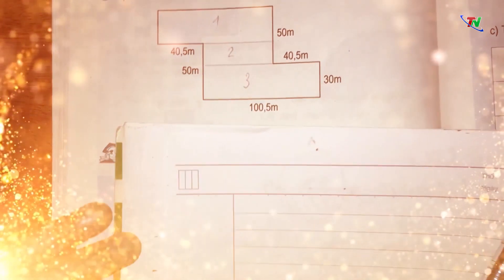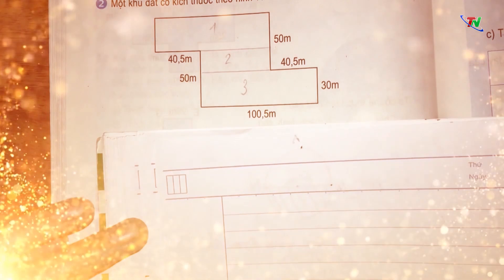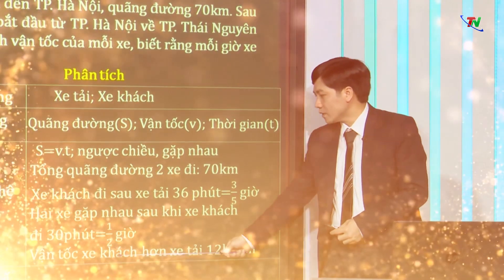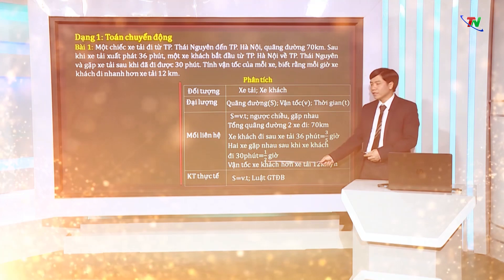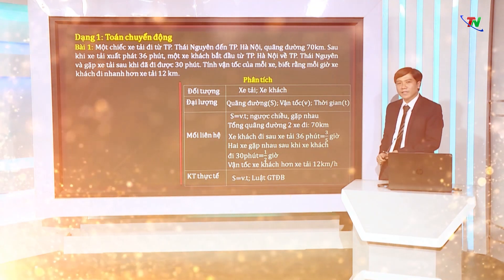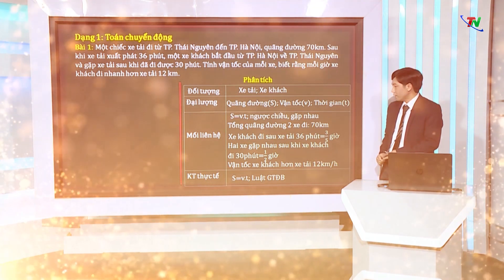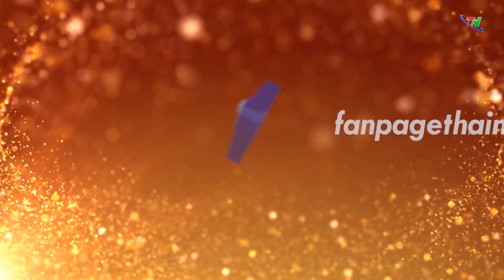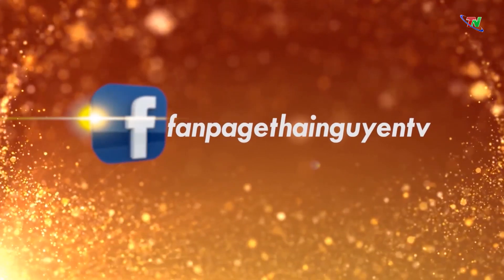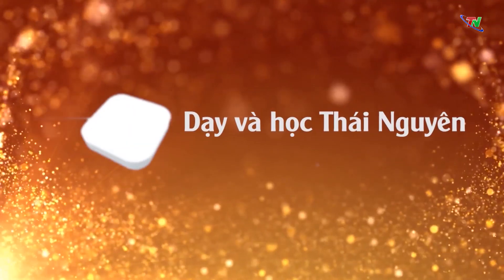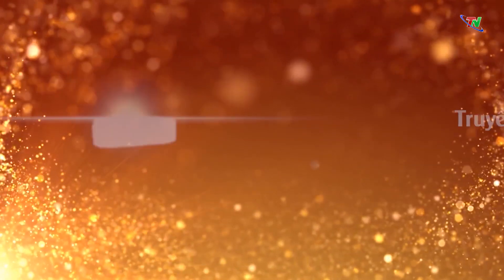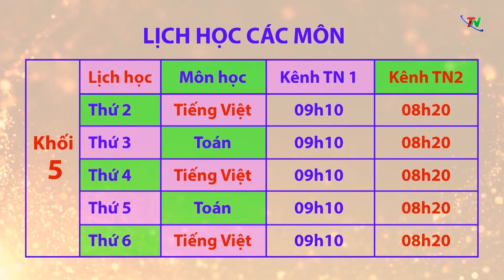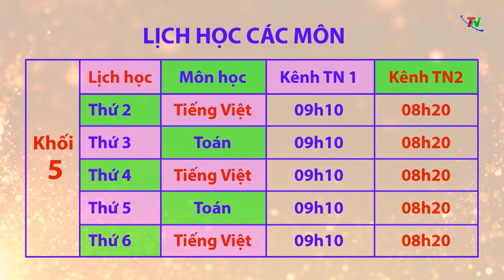Chương trình được phát sóng lúc 8h20 phút thứ 2 đến thứ 6 hàng tuần, phát lại vào buổi chiều cùng ngày trên cả 2 kênh TN1 và TN2 Đài Phát Thanh Truyền hình Thái Nguyên, bắt đầu từ ngày 16 tháng 3. Đồng thời được đăng tải trên website thainyuentv.vn, trên fanpage Truyền hình Thái Nguyên TNTV, trên 2 kênh Youtube Dạy và Học Thái Nguyên và Truyền hình Thái Nguyên TNTV, giúp học sinh có thể xem lại bất cứ lúc nào.